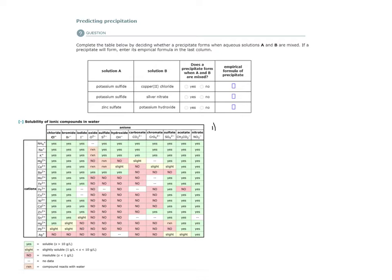First we have potassium sulfide, a solution of potassium sulfide reacting with a solution of copper chloride. So we have K2S potassium sulfide, this is a solution, and we have copper chloride, also a solution.